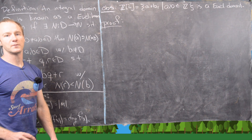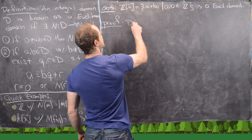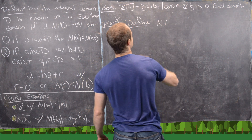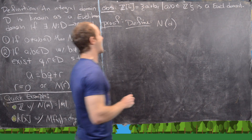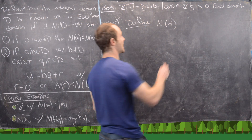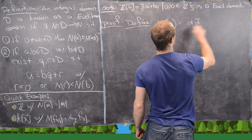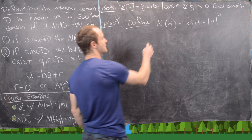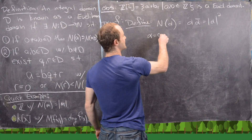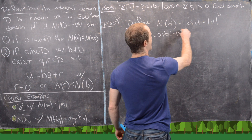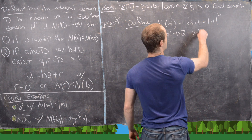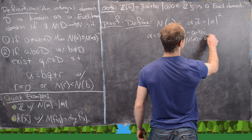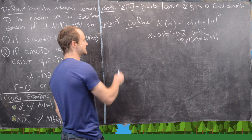First we need to figure out what a norm function would be. Let's define the norm of α, where α is in ℤ[i], as α times α-bar — in other words, the modulus of α squared. As a reminder, if α equals a + bi, then α-bar equals a − bi, and that makes the norm of α equal to a² + b².